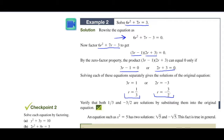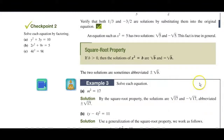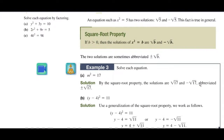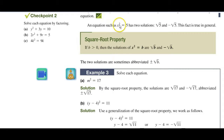You may notice that we are getting two solutions. The reason is that these are quadratic equations, and you should have an equal number of solutions as the degree of the variable.